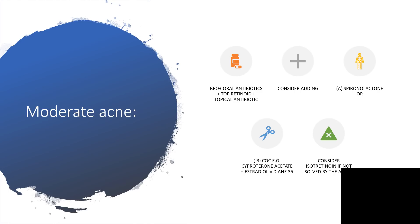If it is moderate acne, we use benzoyl peroxide plus oral antibiotics plus topical retinoids plus topical antibiotics. So you can use a combination of benzoyl peroxide and antibiotics topically, like Clindoxyl, and then use oral antibiotics and topical retinol. You can consider adding spironolactone or combined oral contraceptives — cyproterone acetate and ethinyl estradiol — that is Diane-35. Some may go further to treat it seriously with Accutane.